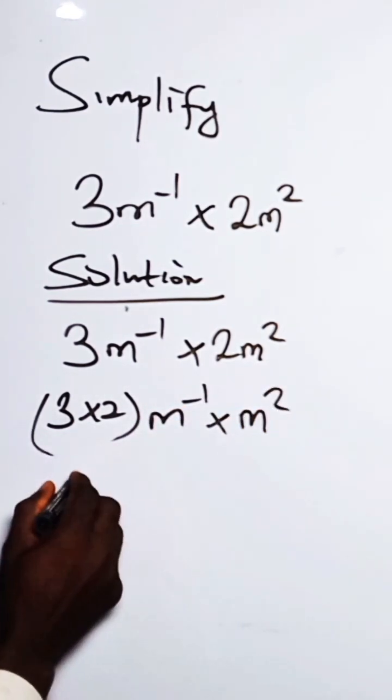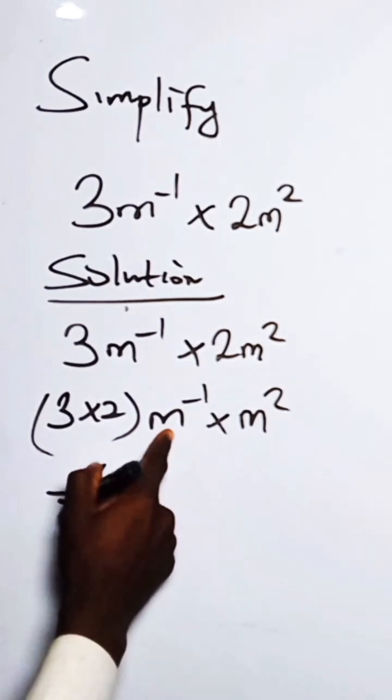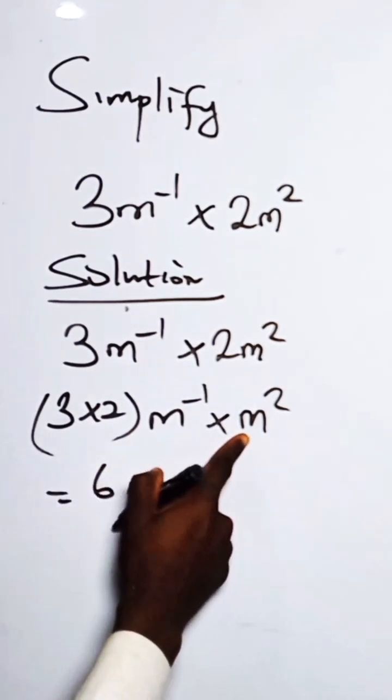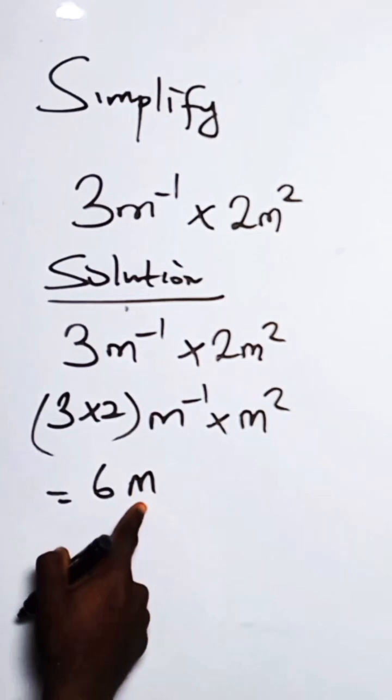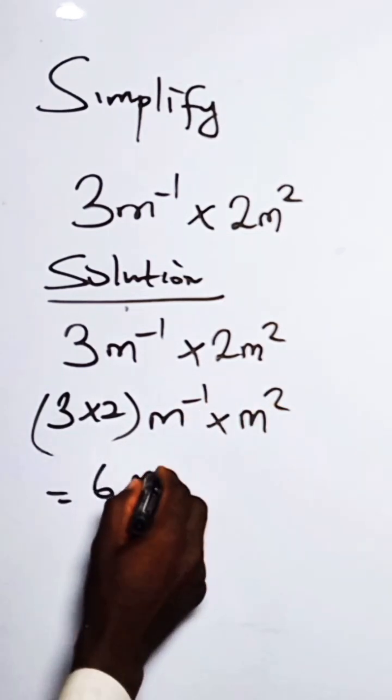So for 3 times 2 is 6. So we have m. So when we apply the number of indices, multiplying the same base, we pick out 1. We have the index.